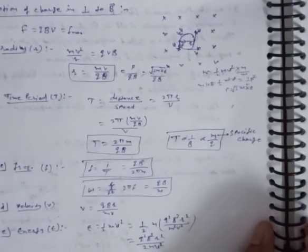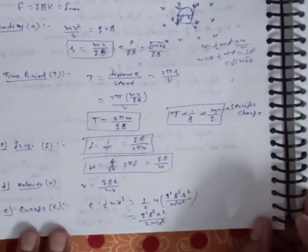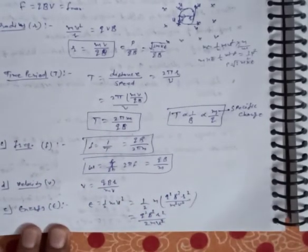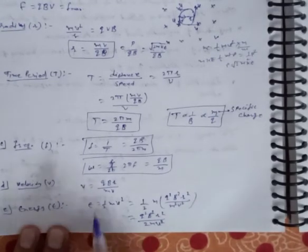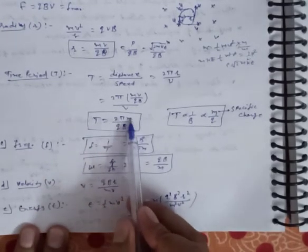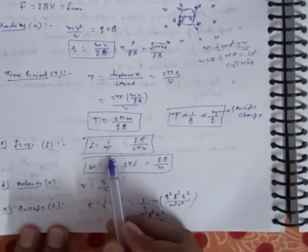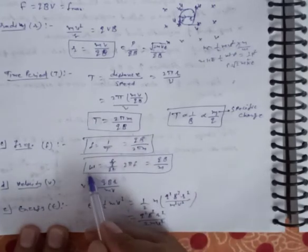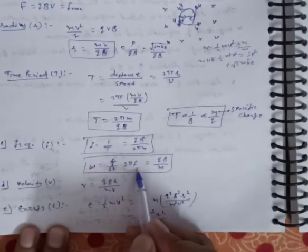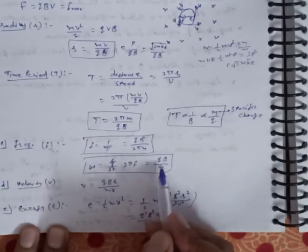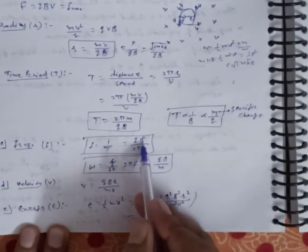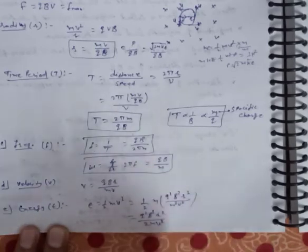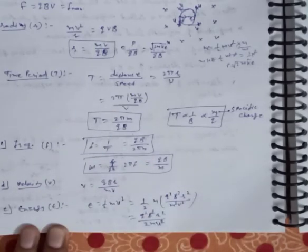Next we calculate frequency. Since frequency and time period are reciprocals of each other: f = 1/T = qB/(2πm). Then angular frequency ω = 2πf = 2π × qB/(2πm). The 2π cancels, giving ω = qB/m.